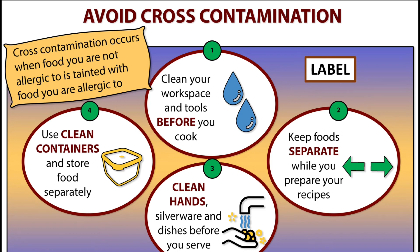Pharmaceutical industry is just like working in a kitchen. Both processes have a lot of similarities. Imagine you're working in a kitchen — after cooking one dish, before the second dish, you need to clean the vessels, utensils, and the platform where you've been cooking. To avoid cross contamination, we use clean containers, store the food separately, clean the platform, and clean the equipment used for cooking. We keep food used in different recipes separately and clean our hands and dishes before serving. Similarly, in pharmaceutical industry, we follow all these steps to avoid cross contamination.